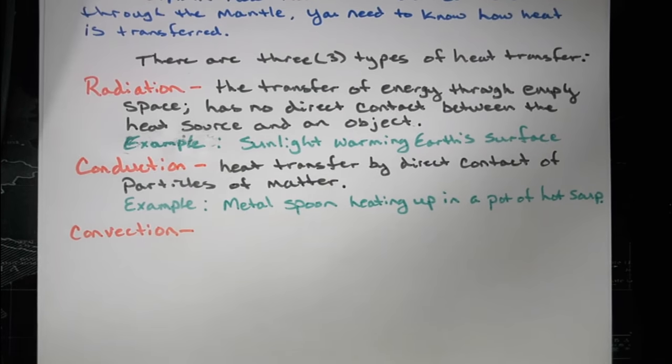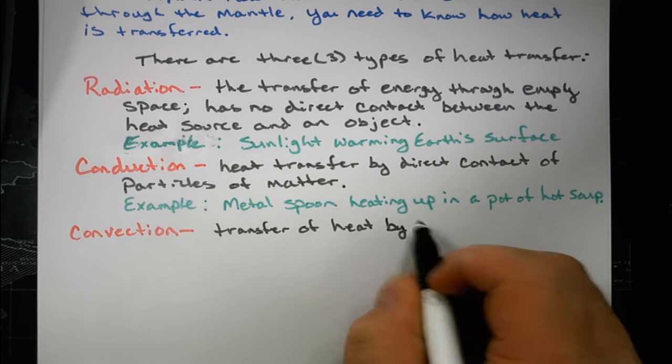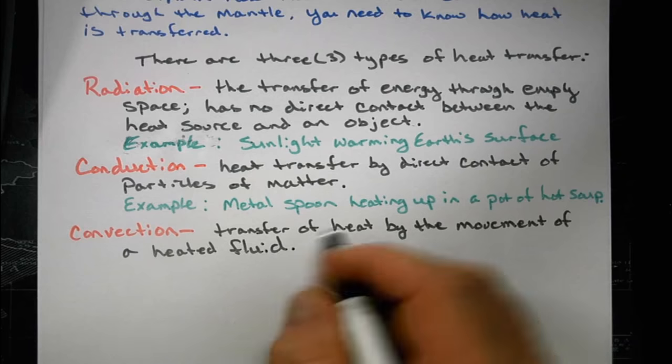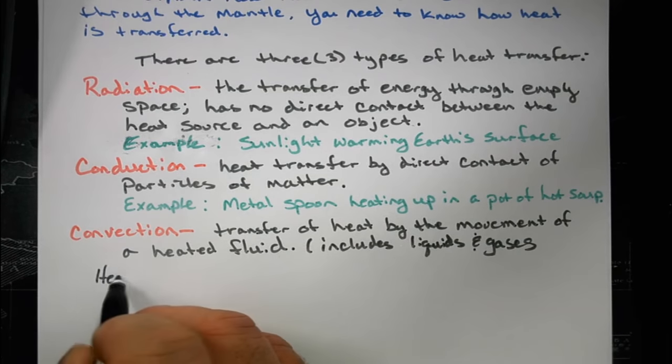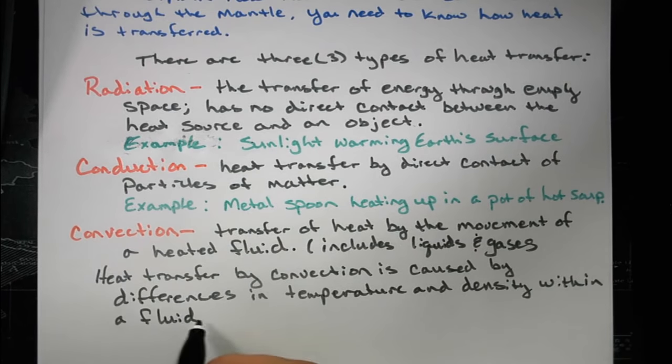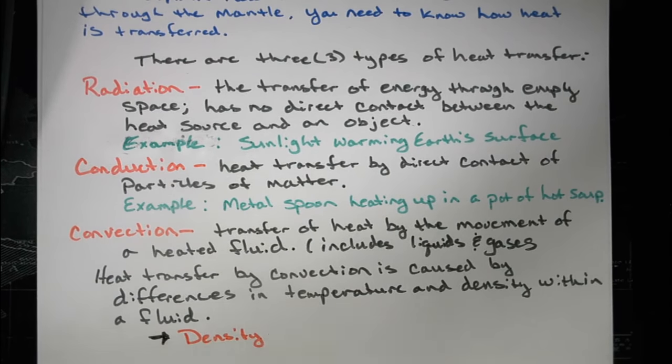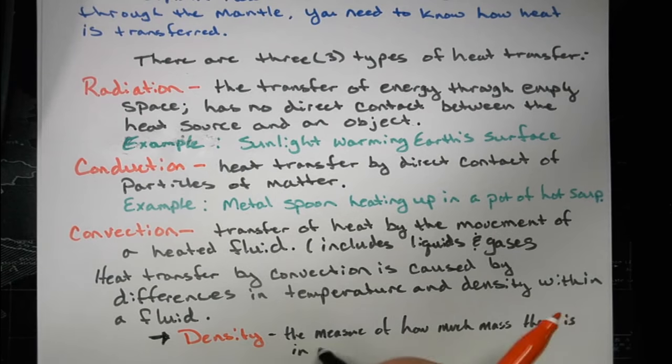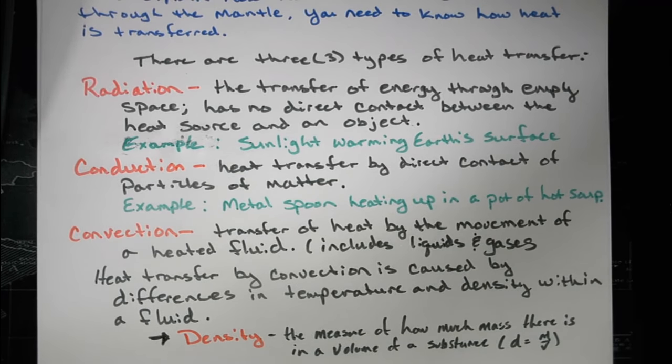The third kind is convection. Convection is the transfer of heat by the movement of a heated fluid, which includes liquids and gases. Heat transfer by convection is caused by differences in temperature and density within a fluid. Density is the measure of how much mass there is in a volume of a substance.